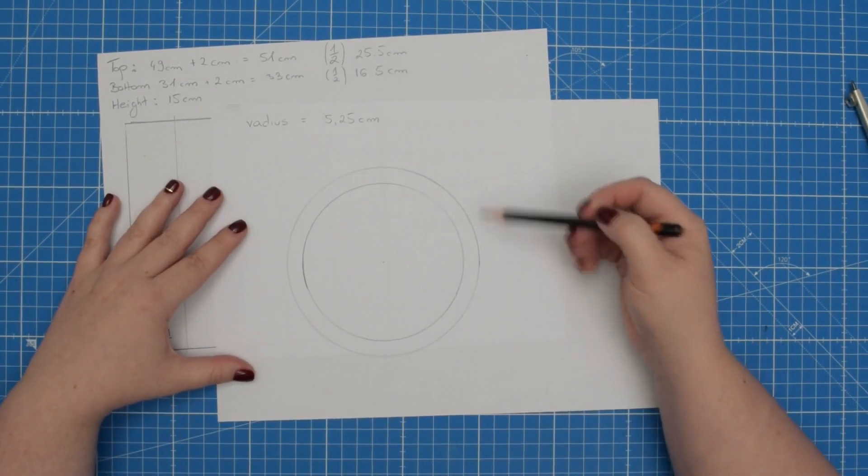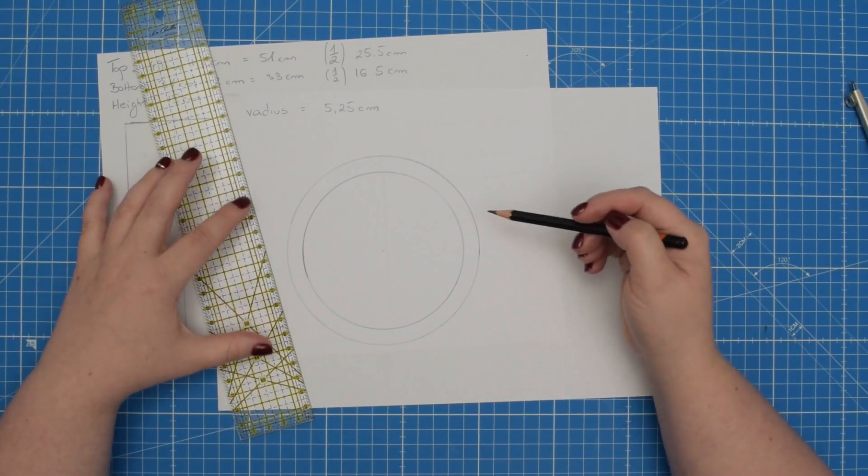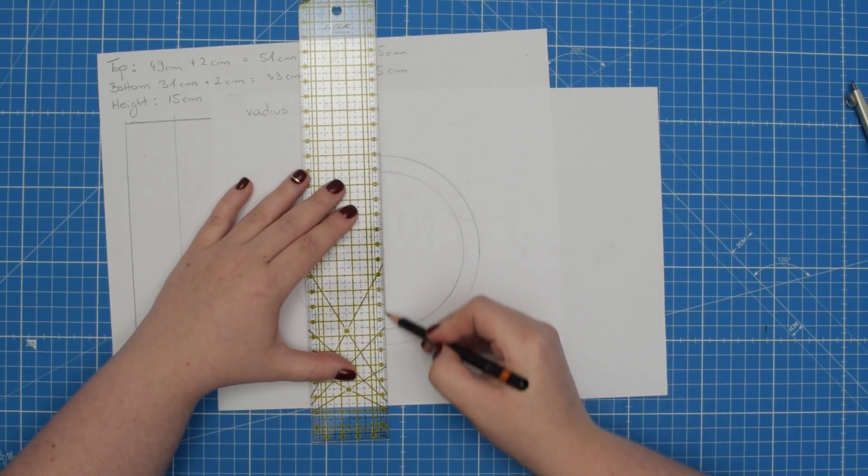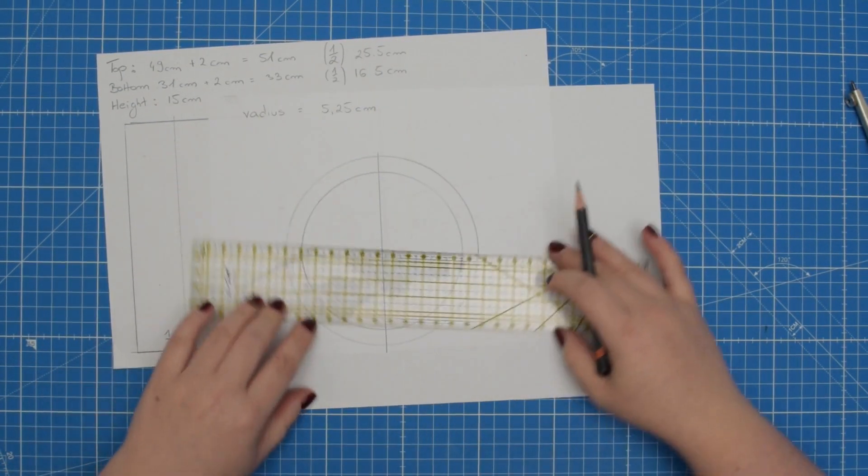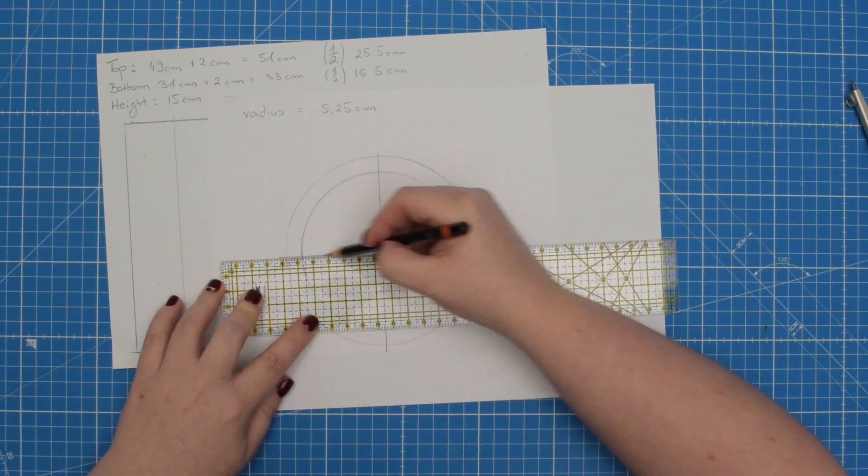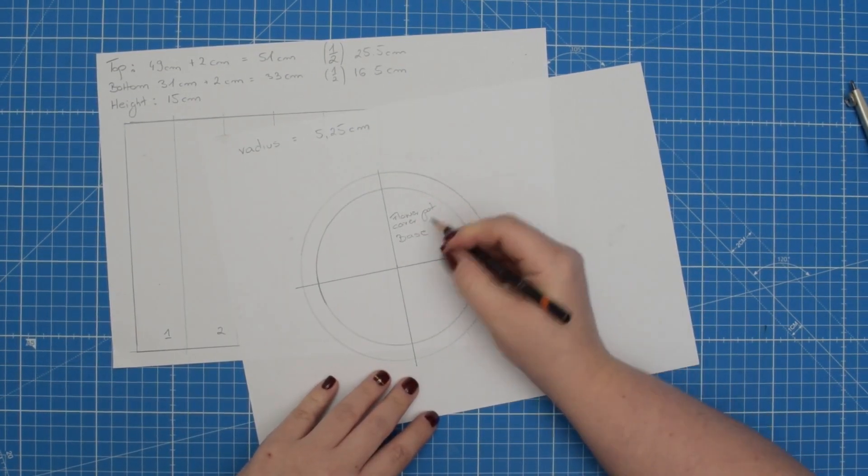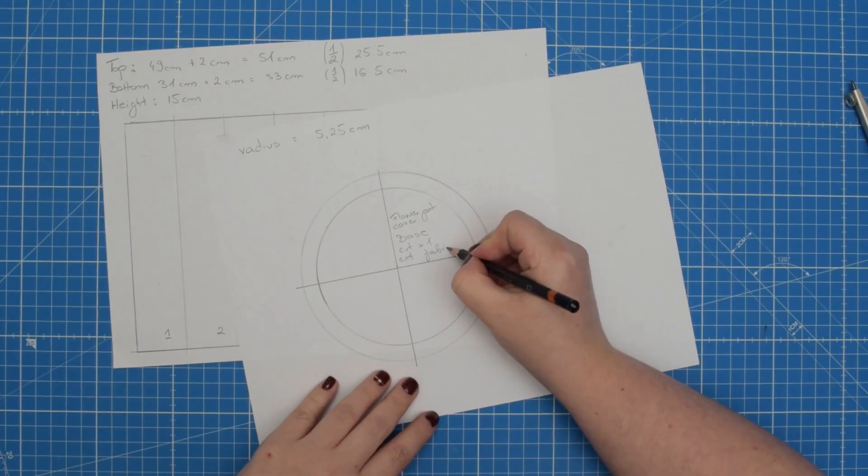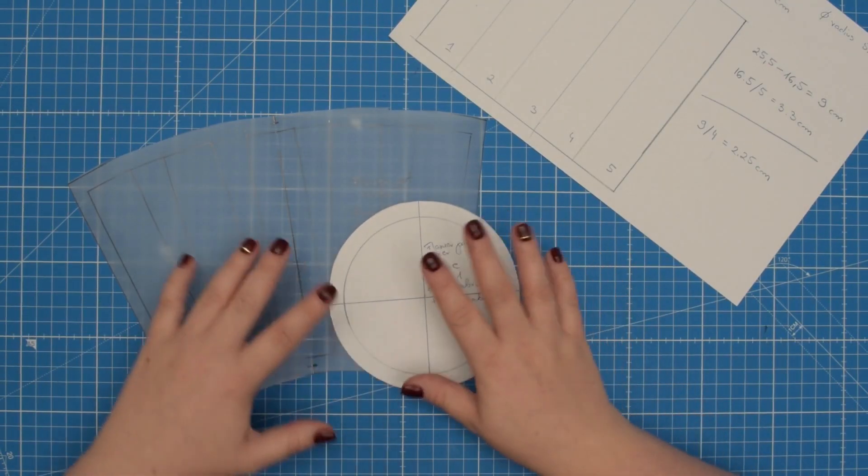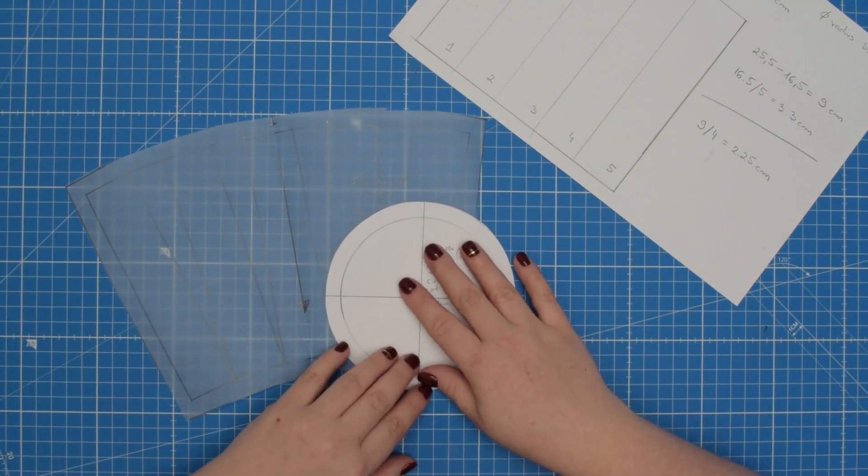Once you have your pattern piece drafted then you can divide it into 4 equal sections so it is easier for you to sew. To do that you will need to draw 2 lines that go through the center of your circle at a 90 degree angle. And lastly remember to label your pattern then you can cut it out. And just like that you have created a custom size pattern for your individual flower pot.